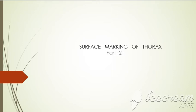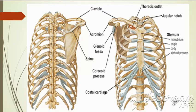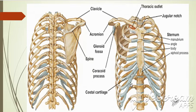This video is a continuation of surface landmarks of thorax, Part 1. Today we will start from the 6th landmark, that is costal cartilage. The 2nd costal cartilage is attached to the sternal angle. The 7th costal cartilage forms the upper part of the infrasternal angle, and the 10th costal cartilage forms the lower part of the infrasternal angle.